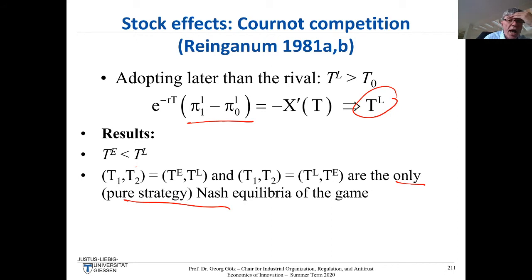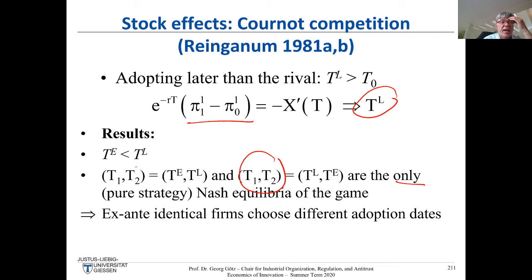What is a bit less satisfying is that the early adopter earns higher profits than the late adopter — you would always want to be the early adopter. We will return to this later in the setup of a paper by Fudenberg and Tirole from 1985, where rent equalization is introduced in a slightly different model.